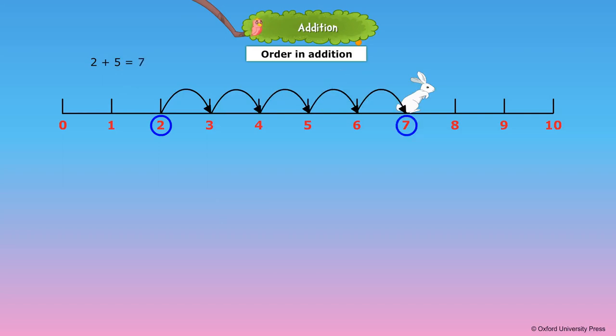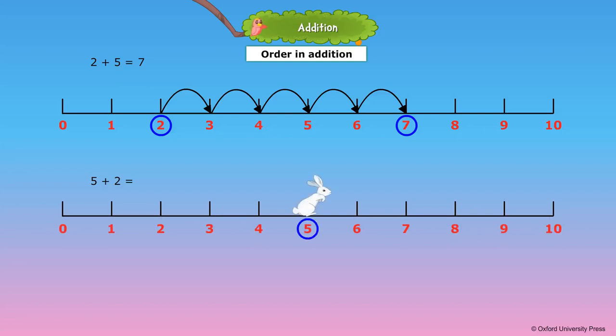Now let us change the order of numbers and find the sum. What is 5 plus 2? The bunny starts at 5 and jumps forward 2 times. The bunny reaches 7. 5 plus 2 is equal to 7.